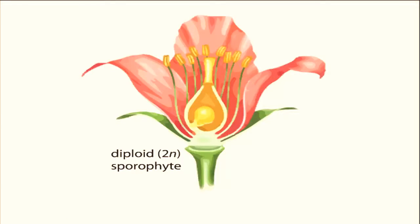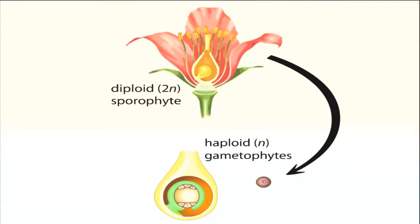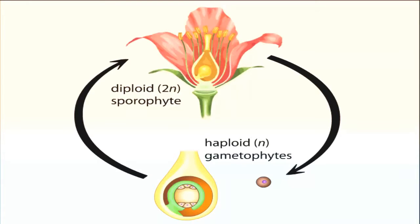As with all land plants, the life cycle of an angiosperm alternates between a diploid sporophyte generation, represented here by the flower of the mature sporophyte plant, and a haploid gametophyte generation.